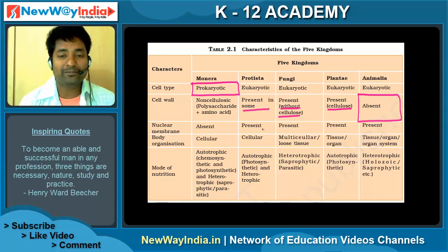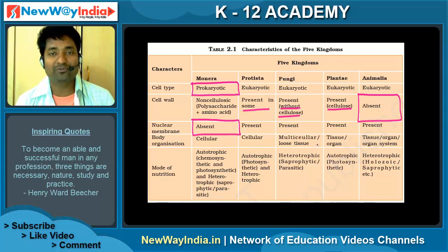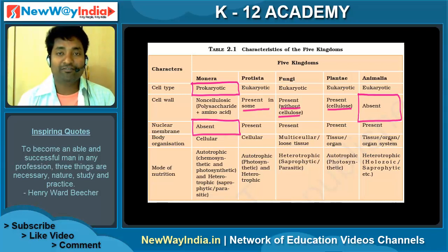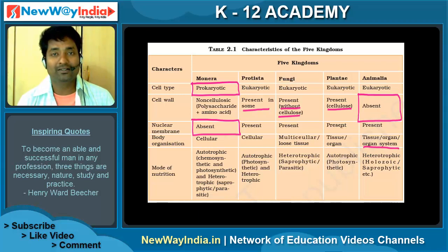Nuclear membrane is absent in Monera but present in Protista, Fungi, Plantae, and Animalia. For body organization: Monera and Protista are cellular; Fungi is multicellular with loose tissue organization; Plantae has tissue and organ level organization; and Animalia has organ system level organization — from cells up to full organ systems like the reproductive, circulatory, and nervous systems.